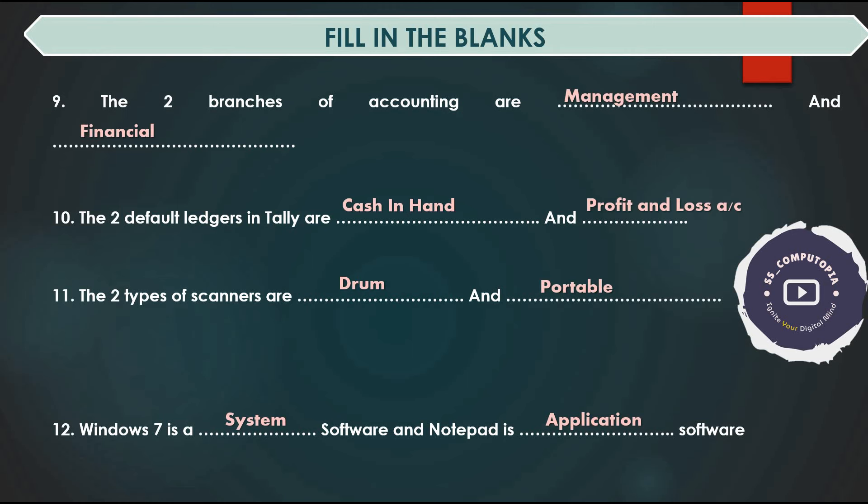The two branches of accounting are Financial and Management. The two default ledgers in Tally are Cash in Hand and Profit and Loss. Two types of scanners are drum scanner and portable scanner. Windows 7 is system software and Notepad is application software.